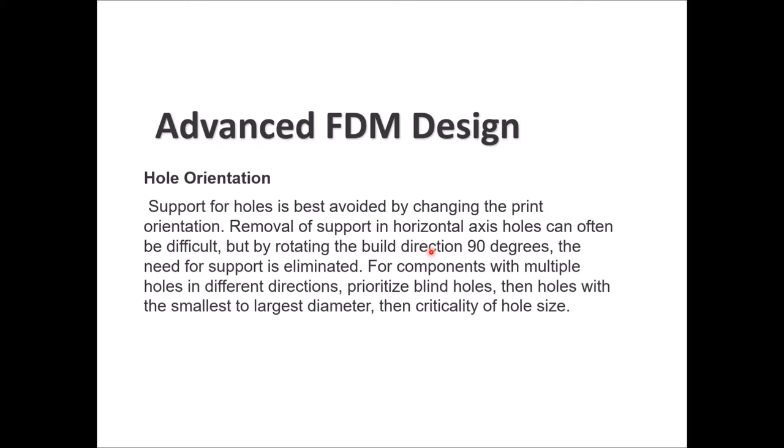We have a lot of problems with hole creation using FDM. If you want your hole to be perfect, you need to support it to avoid the hanging phenomenon. This is done by changing the print orientation. You can remove the need for support on certain axis holes by rotating the build direction 90 degrees or as needed, so that you manipulate the layer build direction and avoid support inside the hole — otherwise you'll end up drilling the hole manually.